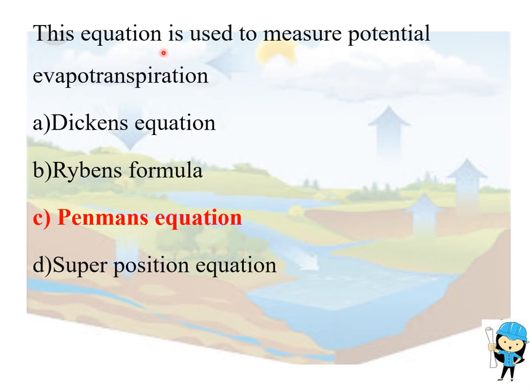This equation is used to measure potential evapotranspiration. The equation is Penman's equation, where ET is measured - that is, potential evapotranspiration is measured in mm per day. Penman's equation is based on energy balance and mass transfer approach.